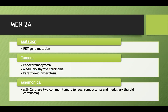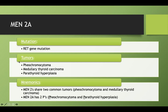Some mnemonics: the pheochromocytoma and medullary thyroid carcinoma are the first two tumors shared by both MEN2 syndromes. Remember the 3-2-1 rule — MEN2A has two P's, so you know the pheo, and that's how you remember that parathyroid hyperplasia is the second P in MEN2A syndrome.